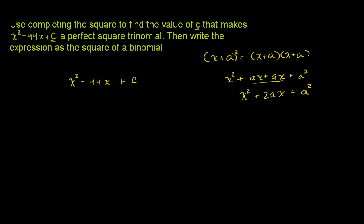So if we can get this into this pattern, where I have whatever value is here, if I take half of it, right? This is going to be 2a here. If I take half of it and square it over here, then this will be a perfect square.